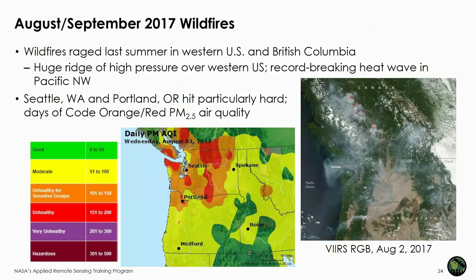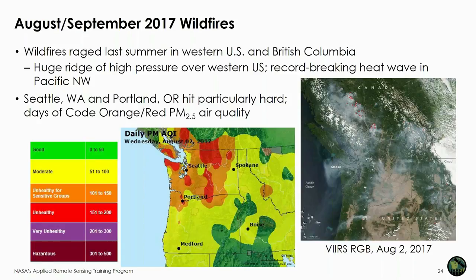Last summer — August and September of 2017 — there were serious wildfires in the Western US and British Columbia. A record-breaking heat wave in the Pacific Northwest meant Seattle, Washington and Portland, Oregon had days of code orange and code red PM 2.5 air quality. On August 2nd specifically, the daily observed air quality was in the orange and red range for Portland, Seattle, and most of Washington state. A corresponding VIIRS true color image shows extensive smoke — grayish features — with red dots indicating satellite-detected fire locations.